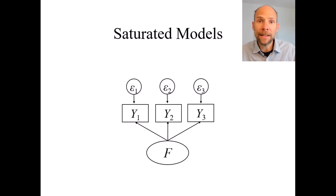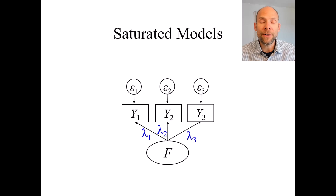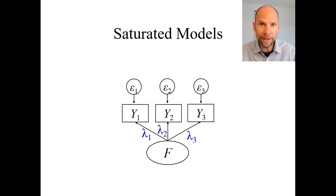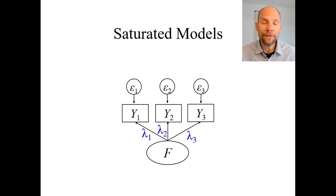Here I have a single-factor congeneric model of confirmatory factor analysis — congeneric meaning we have three indicators or observed variables y1, y2, and y3 that are assumed to measure the same factor, but with different factor loadings. The factor loadings for those three indicators would be estimated as free parameters and could take on different values. This is called a single-factor congeneric measurement model in classical test theory, where we have unidimensionality but the indicators can have different loadings. If you have nothing else but only the single factor with its three indicators, then that is a saturated model.